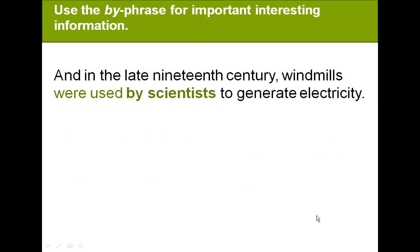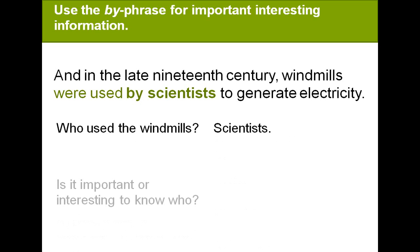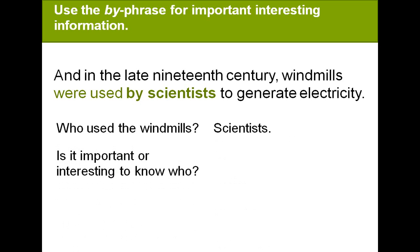We do use the 'by' phrase — meaning 'by' plus the agent — for important, interesting information. For example: in the late 19th century, windmills were used by scientists to generate electricity. Here we are saying exactly who used the windmills. Who used the windmills? Scientists. Is it important or interesting to know who? In this situation, yes. So we will use 'by scientists.' Remember, the scientists are doing the action.